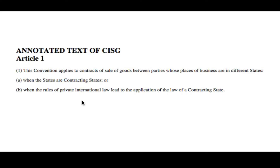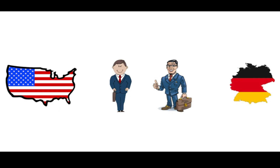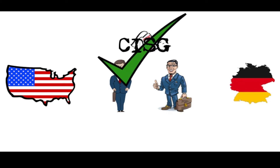Now, the second point is rather complicated, but it's important, so let me break it down with a little more detail and through an example. Let's say we start with two business people, one from the United States and the other from Germany. Does the CISG apply? Well, we know that both states — the United States and Germany — are members of the CISG. So yes, it would apply.